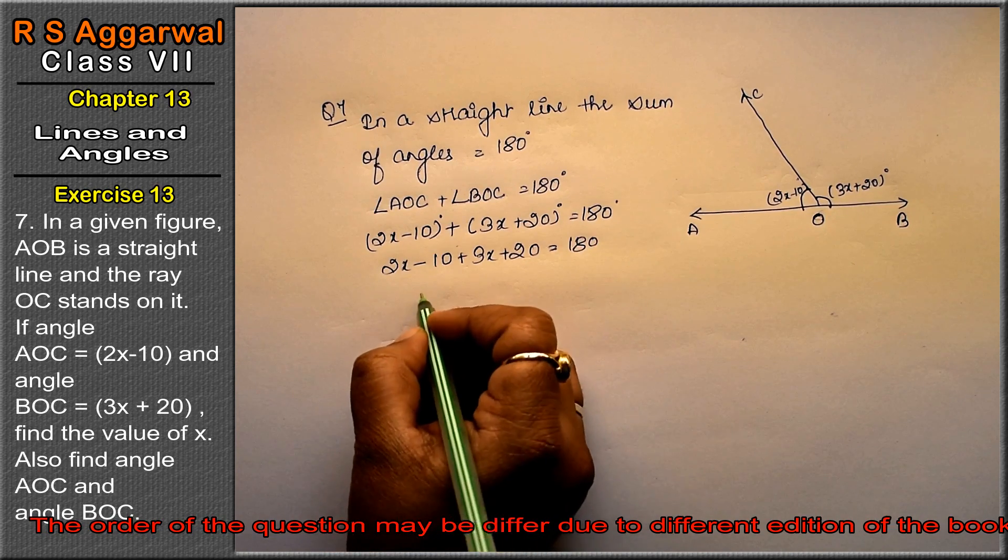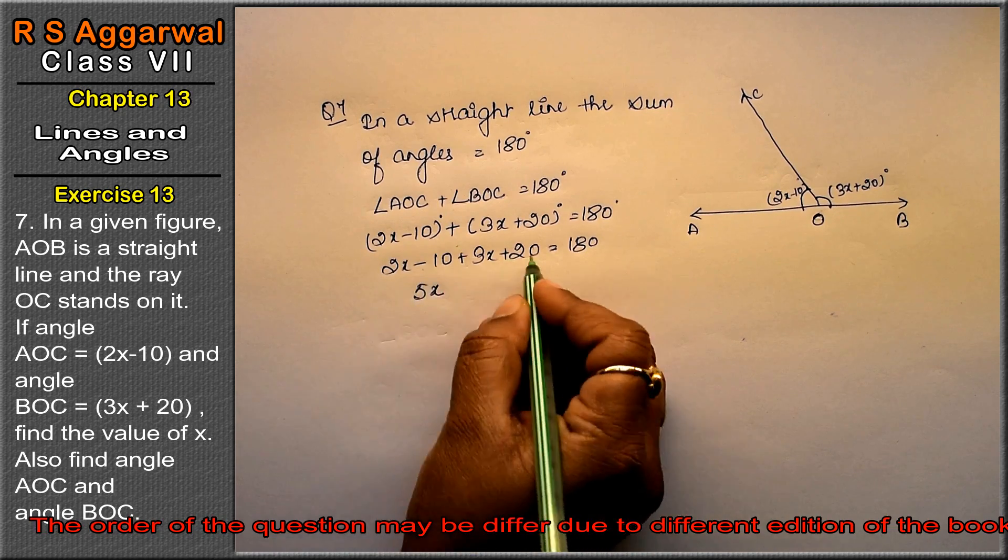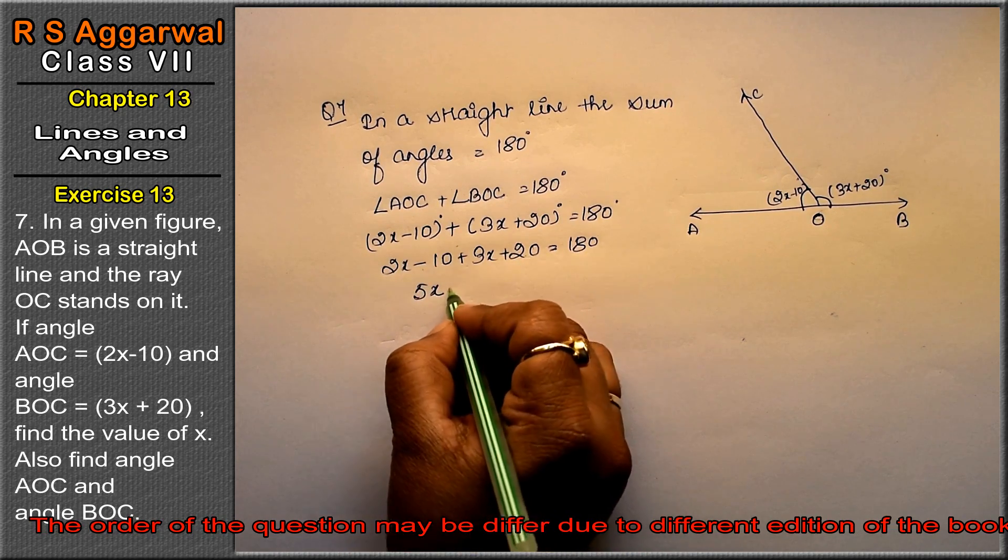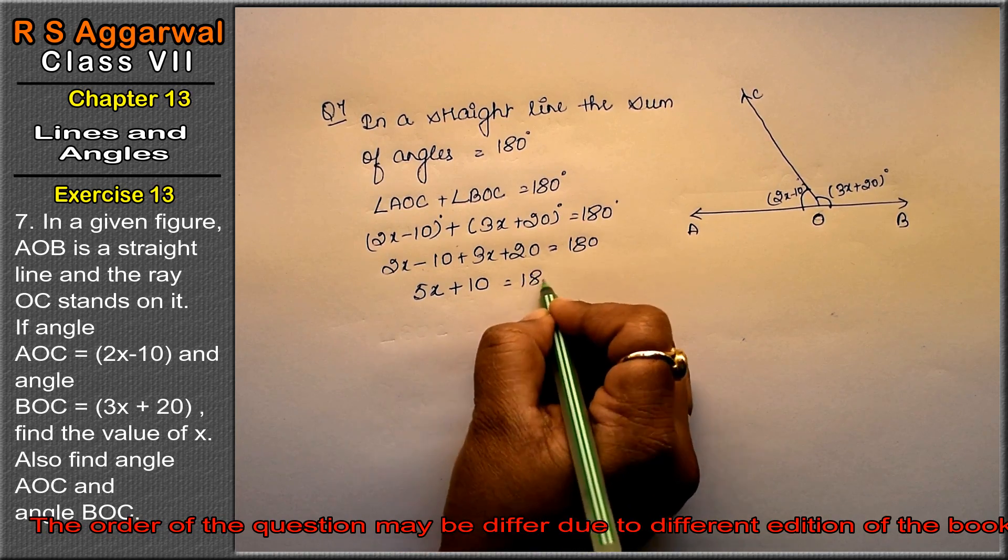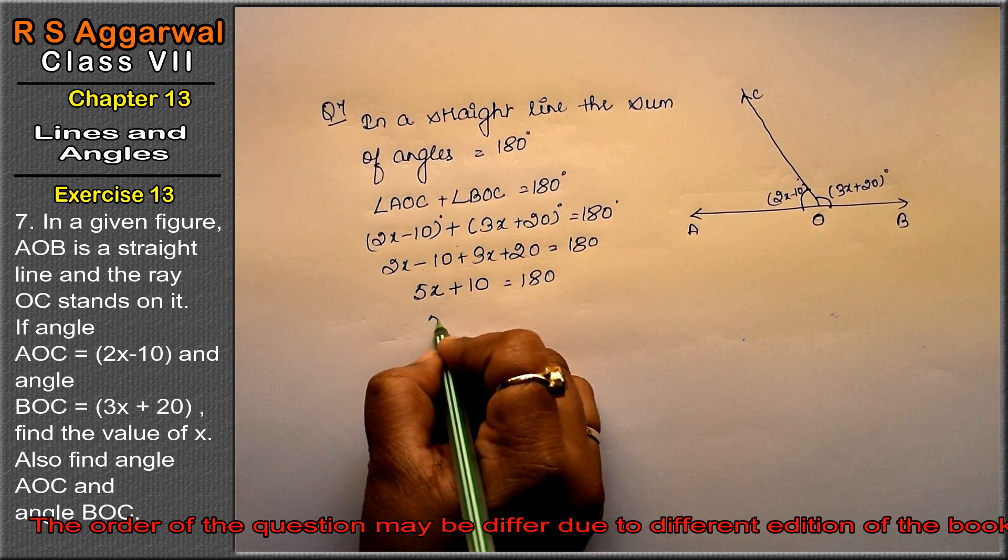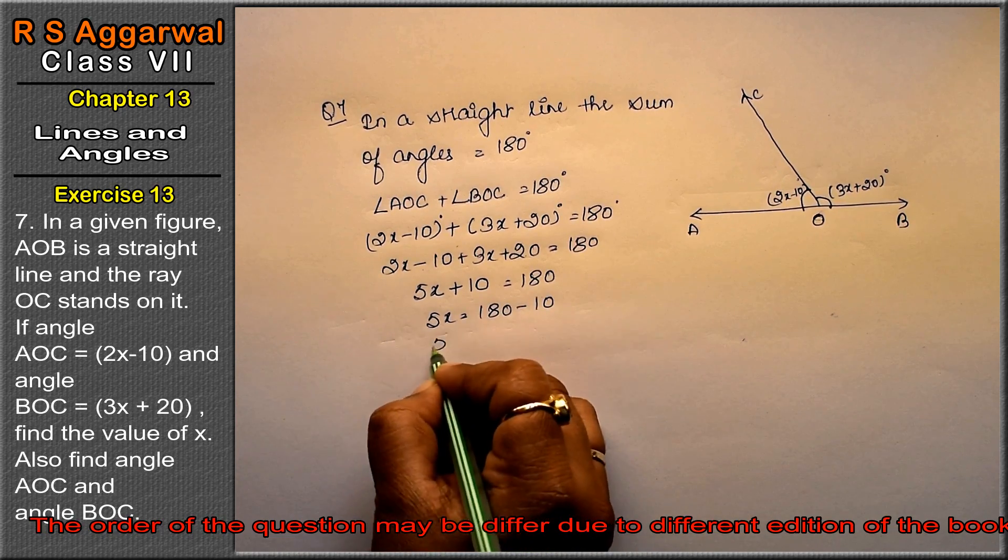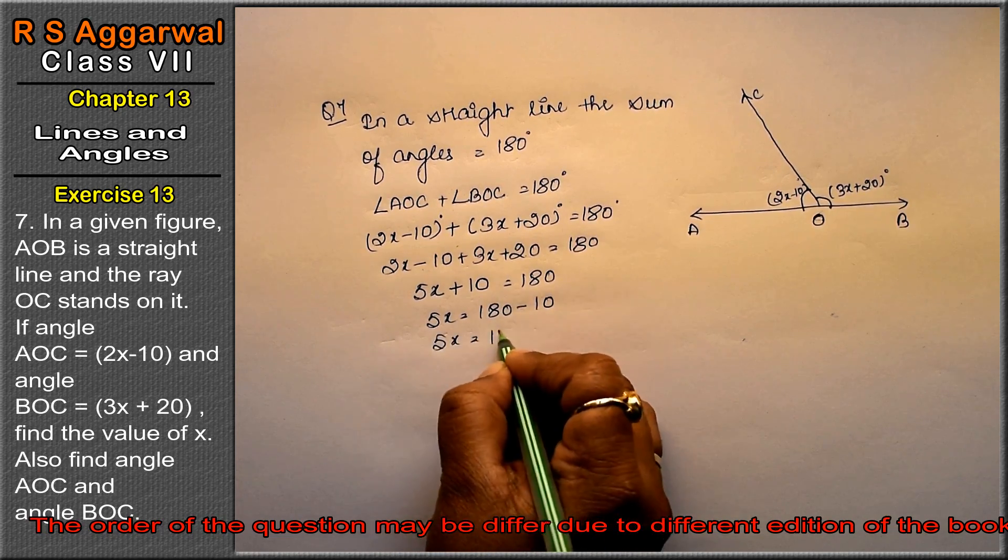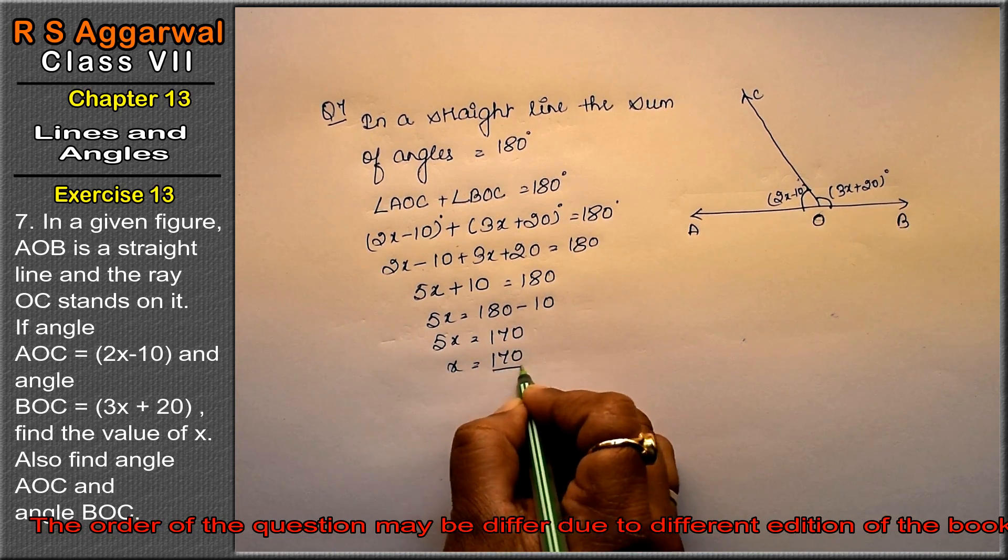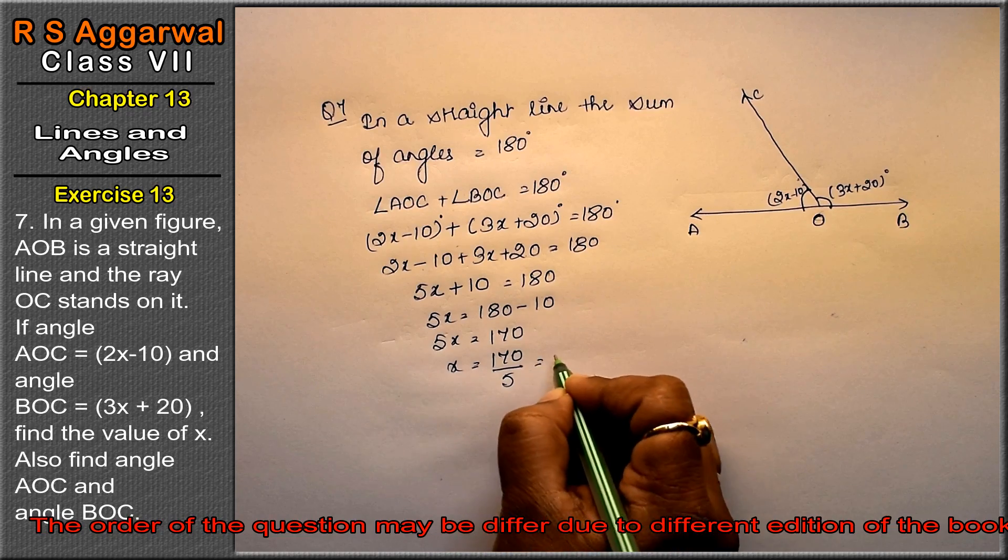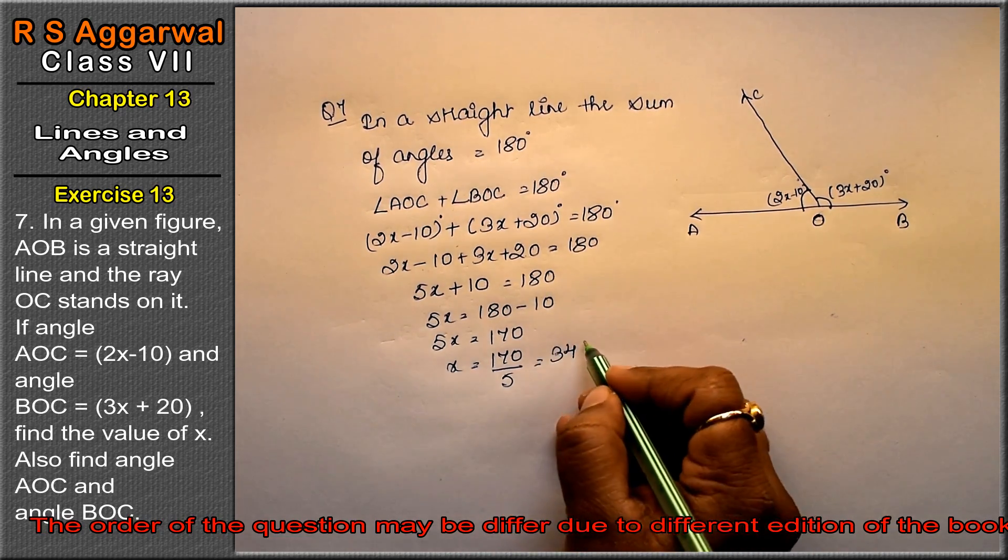Now 3x and 2x are both plus, so this is 5x. How much is this? It is minus and plus. It equals 10 minus and plus, which equals 180 degrees. Now this 10 will go to the other side. So 5x equals 180 minus 10. So 5x equals 170. How much is the value of x? This is 170 divided by 5. 5 threes are 15, 20, 5 fours are 20. Right friends? 34 degrees.